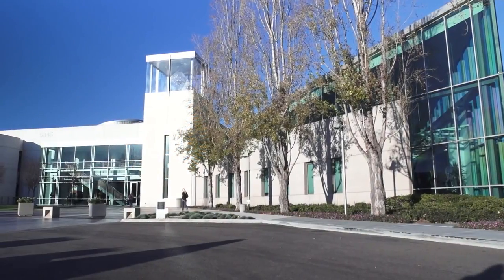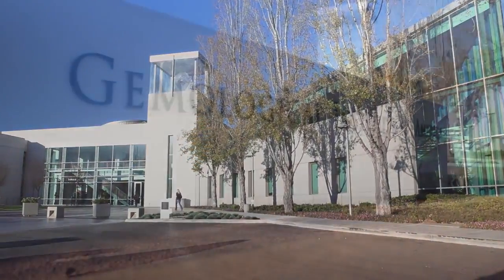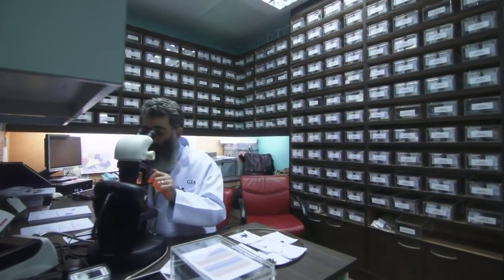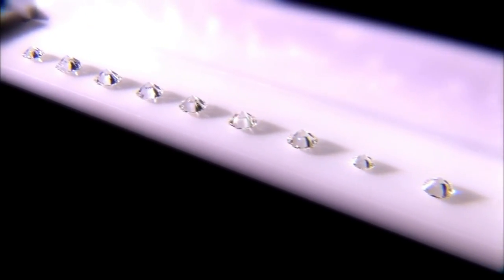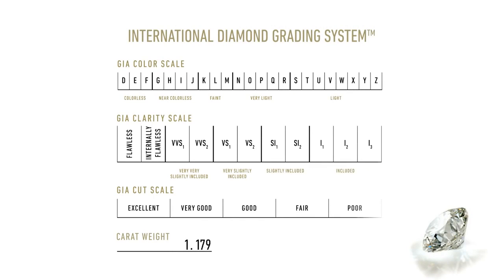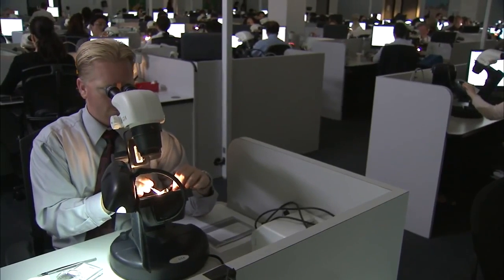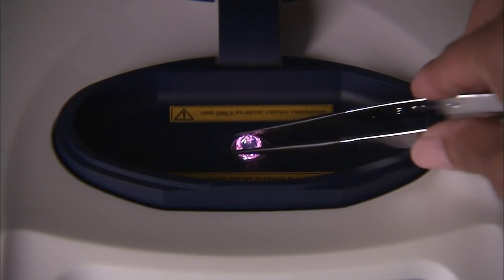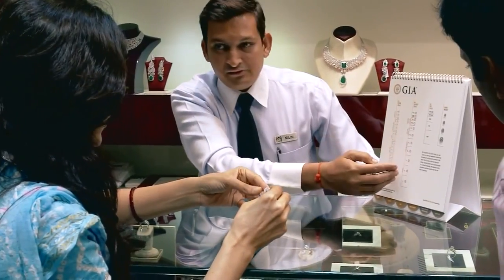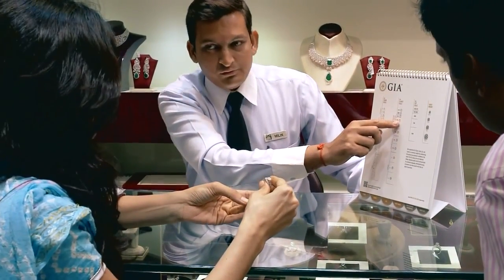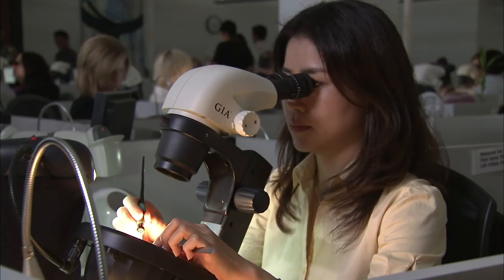A public-benefit independent institute established in 1931, GIA is the leading source of knowledge, standards, and education in gems and jewelry. As the creator of the Four C's and the International Diamond Grading System, GIA maintains the methods and best practices for evaluating and describing diamond quality. Today, virtually everyone in the international diamond industry uses these methods for evaluating and comparing diamonds.